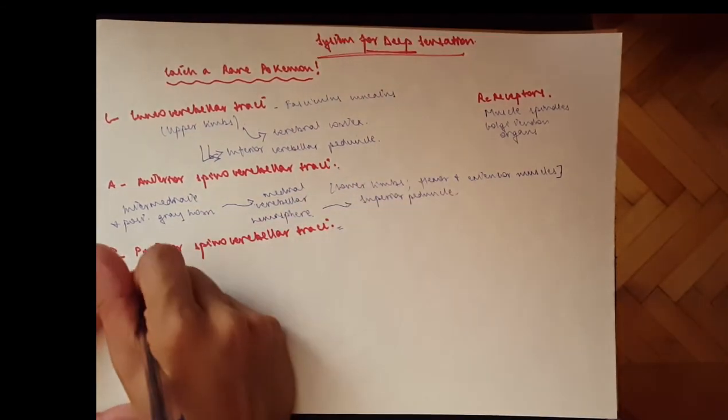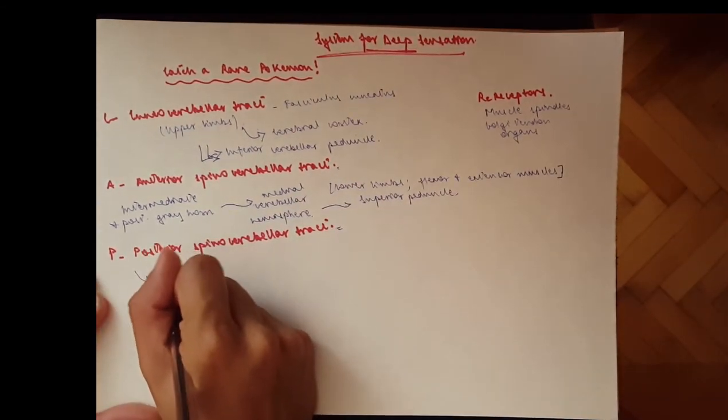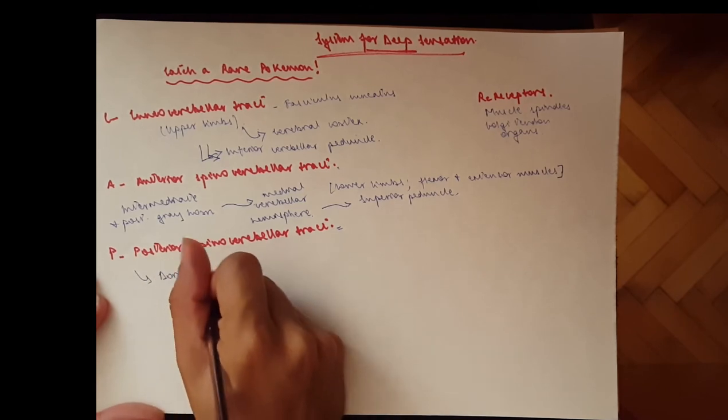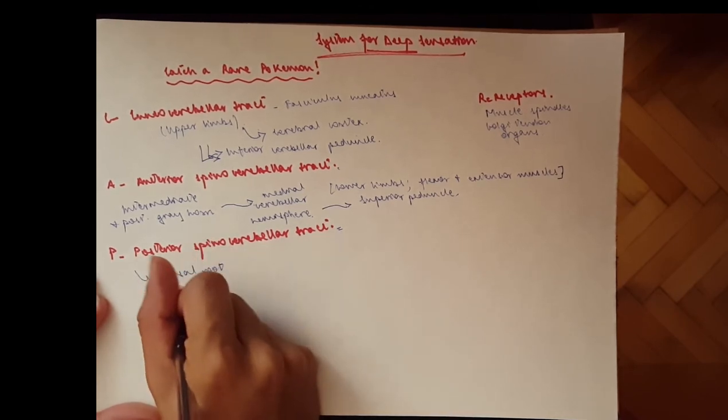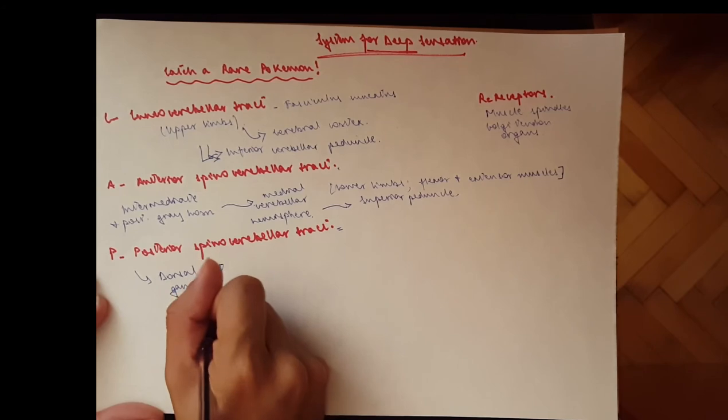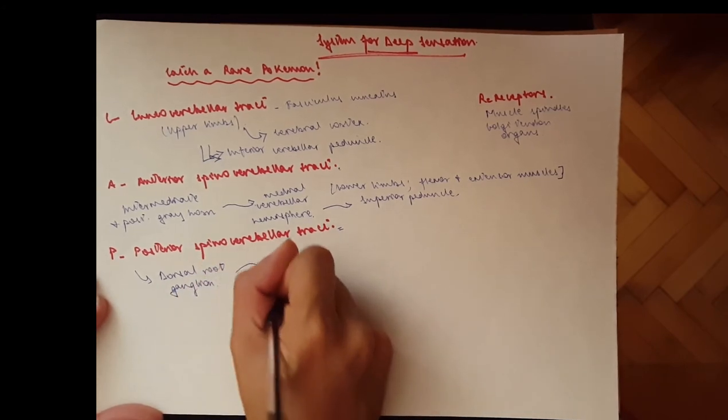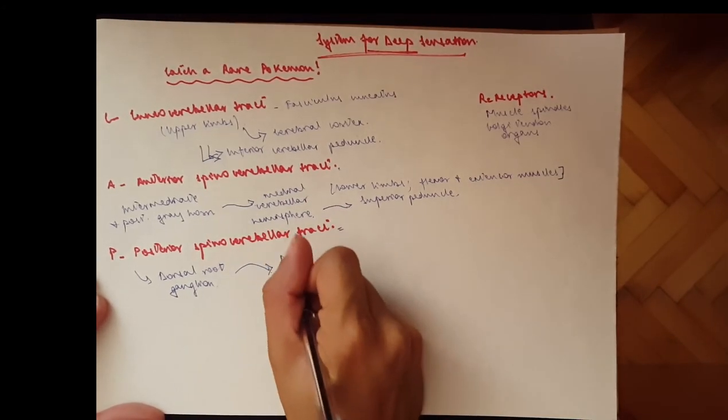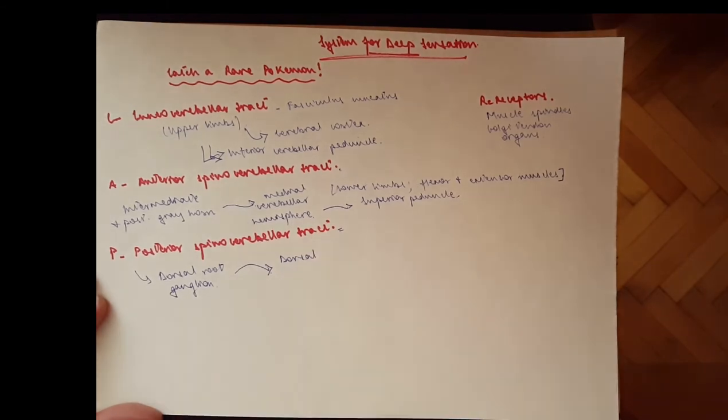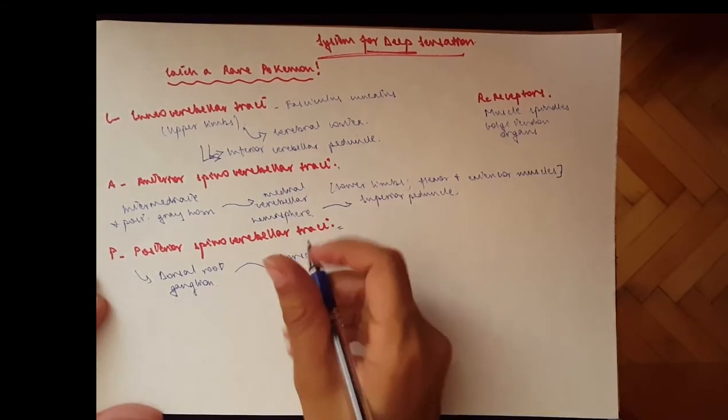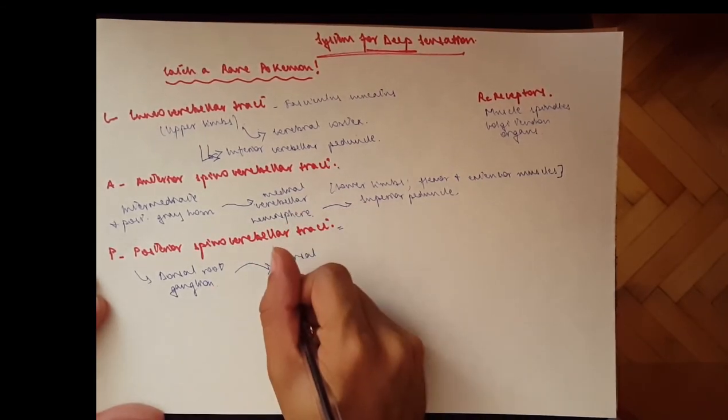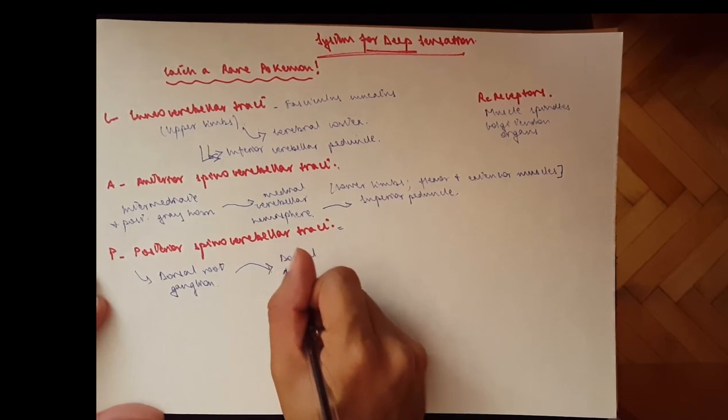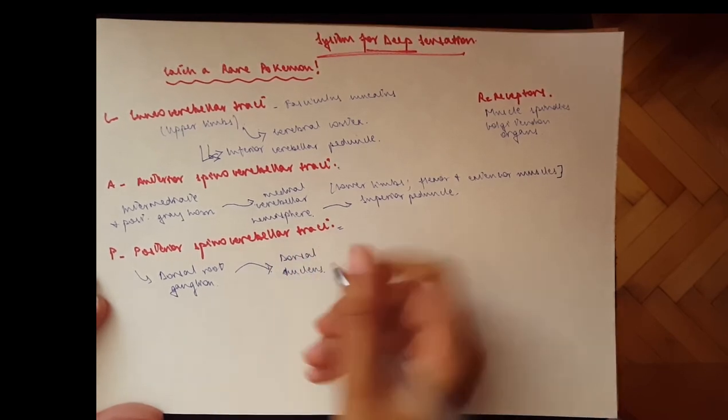Now this one, the receptors go to the dorsal root ganglion in the spinal cord, of course. From here it goes to the dorsal nucleus, and it follows that tract, and that tract is also called Clark's column, dorsal nucleus Clark's column.